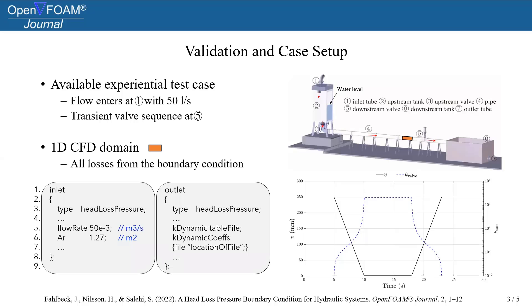In order to get the effects only from the boundary condition itself, a one-dimensional domain is used. So all the losses in the system are from the boundary condition itself. And here is just a summary of some of the inputs for the inlet and outlet boundary conditions. Please read the paper for more detail specification.